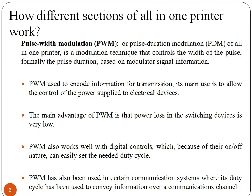Now let's study the working of these sections of the printer. The pulse duration modulation (PDM) section of the all-in-one printer is a modulation technique that controls the width of the pulse, based on modulator signal information. PWM is used to encode information for transmission, and its main use is to control the power supply to electrical devices. The main advantage of PWM is that power loss in the switching devices is very low. PWM works well with digital controls, which can easily set the needed duty cycles, and has also been used in communication systems where its duty cycle conveys information.